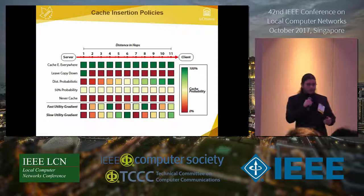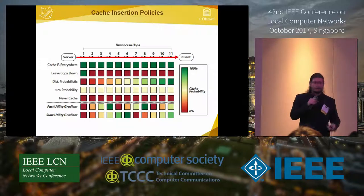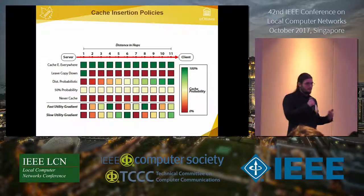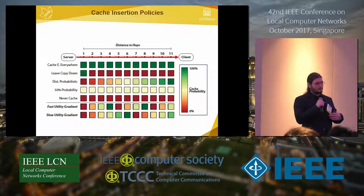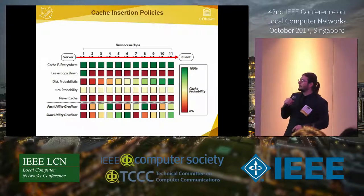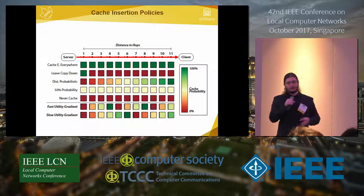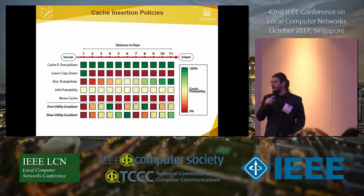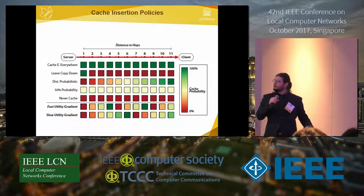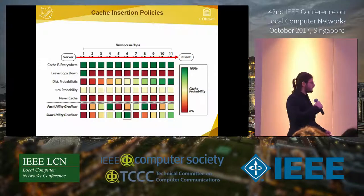Our solution attempts to distribute the probability of an object being copied more symmetrically in the network, placing copies in the middle of the return route. In ICN, interest packets propagate and when a server fulfills requests, a return path is formed — we want to distribute cache copies more evenly along return paths. We also consider whether the item is actually useful for the network, and we can control the speed at which items are placed.